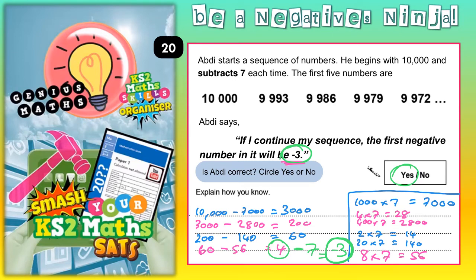Explaining how we know, we could just say that we've subtracted obvious multiples of 7. And the obvious ones that we did was 7,000, 2,800, 140 and 56. We kept subtracting those obvious multiples of 7 until we got down as far as the number 4. And when we took 7 away from that, we get down to minus 3. And that is the first negative number in the sequence. So the answer is yes.